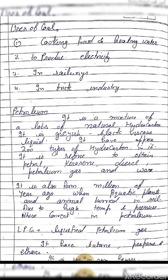we get petrol, kerosene, diesel, petroleum gas, and paraffin wax. It is also formed millions of years ago when aquatic plants and animals were buried in the soil in the ocean.